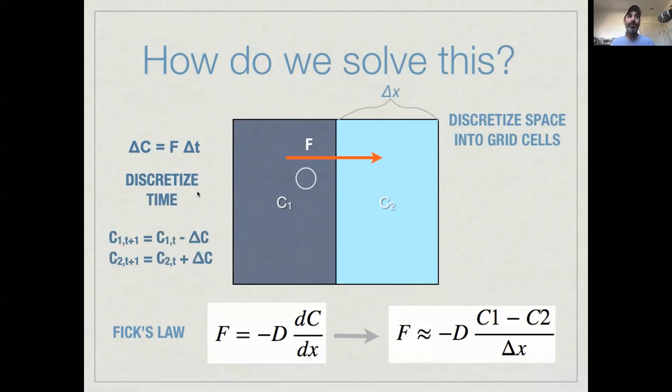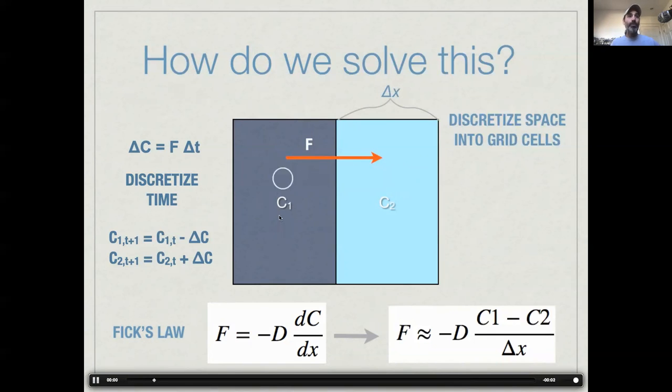And to round this out, we then just write equations very similar to what we did in the population model saying the concentration in pool one at time t plus one is the concentration right now minus this discrete amount that moved out over a discrete amount of time. And the concentration on side two is the concentration right now plus what just came in. So once we've discretized this into essentially a packet that moves over in a specific amount of time, we can then just do a simple model: future equals present plus or minus what moved.